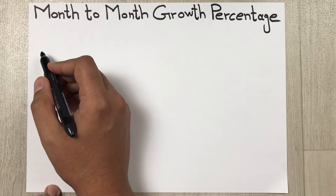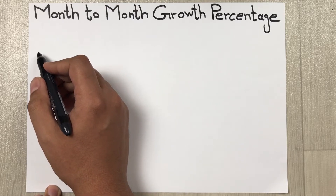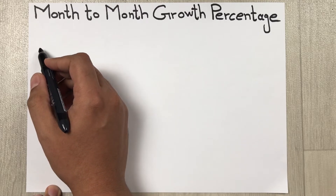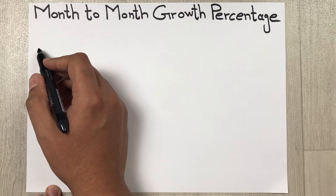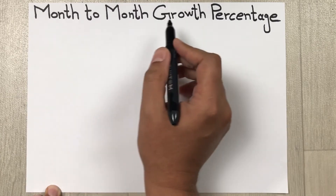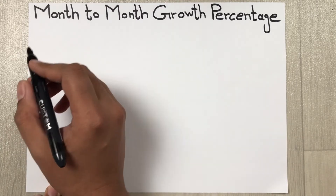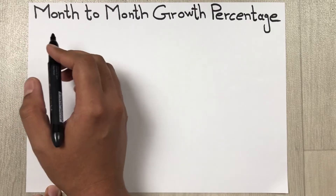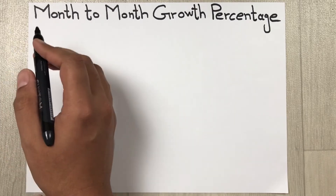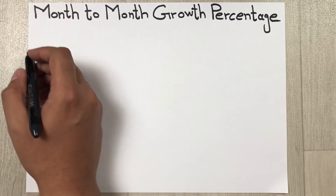Hello guys, I hope you are doing really well. In today's video, I am going to show you how to calculate month-to-month growth percentage. The formula to find out the month-to-month growth percentage is: